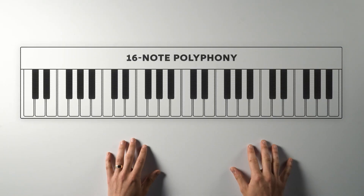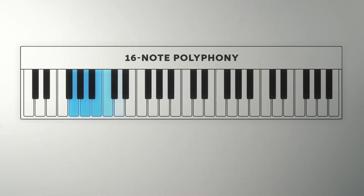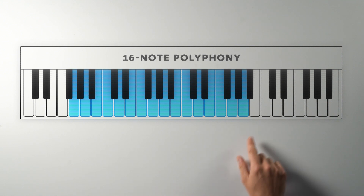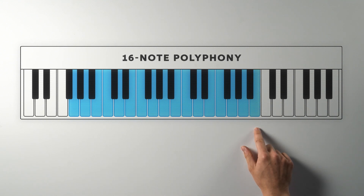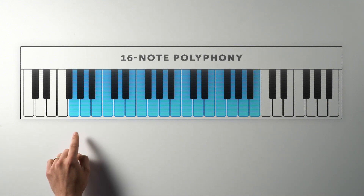Let's take an example. Let's say we have an instrument with a 16-note polyphony. That instrument can sound 16 notes at a time, but as soon as you were to play 17 notes, an original note would drop out.